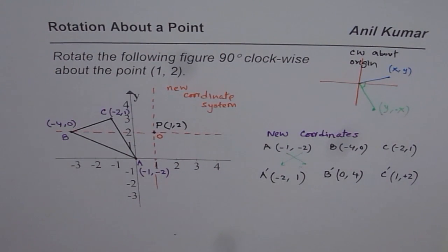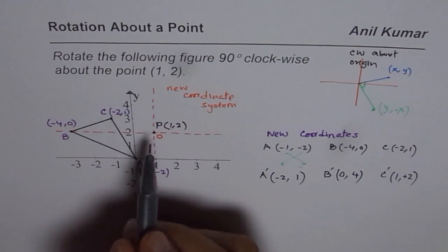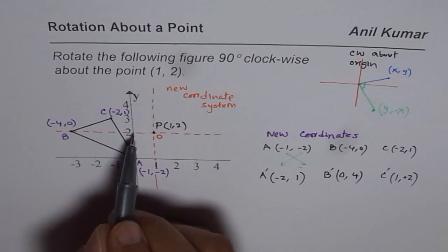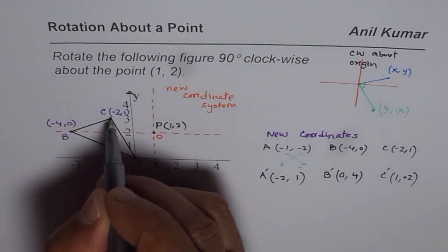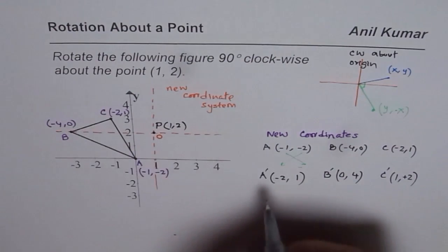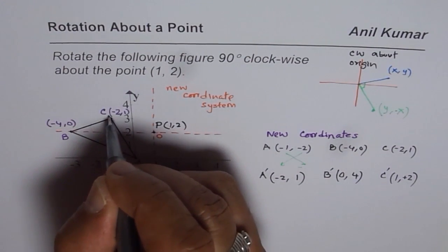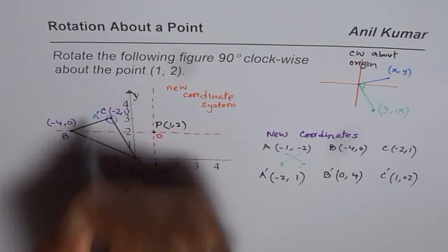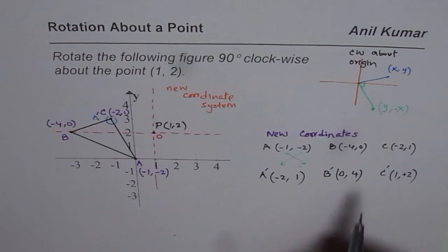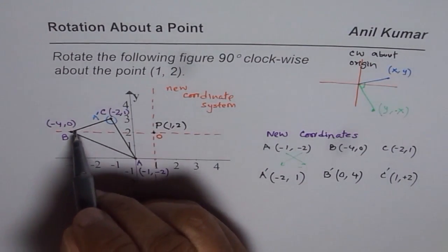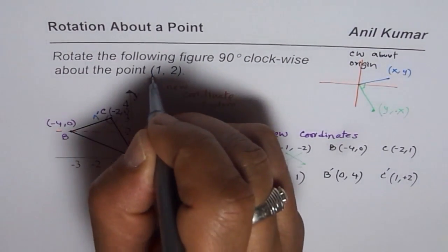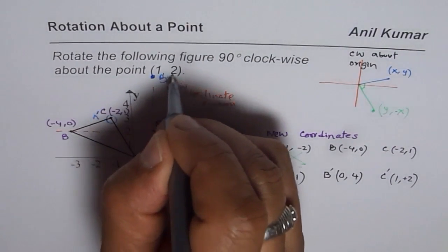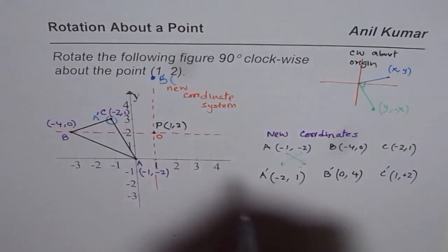Now let's plot these coordinate points with P as the origin. For A' at (-2, 1): from P go minus 2 and then 1 up — that point coincides with where C was, and that becomes A'. For B' at (0, 4): from P go 0 horizontal and 4 up, so from y=2 it goes to y=6. That is B'. For C' at (1, 2): 1 to the right and 2 up from P. That becomes C'.